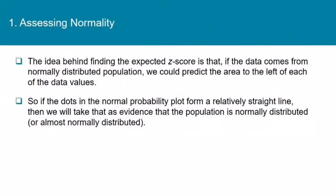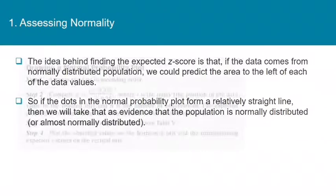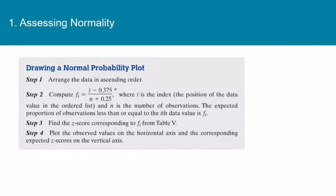If the dots in the normal probability plot form a relatively straight line, then we will take that as evidence that the population is normally distributed, or at least almost normally distributed. Here's the procedure from your textbook for how to construct a normal probability plot. We're going to end up doing this on the calculator, but I do want to walk you through doing one by hand so you can understand what the calculator is doing for us.